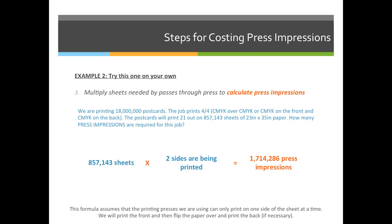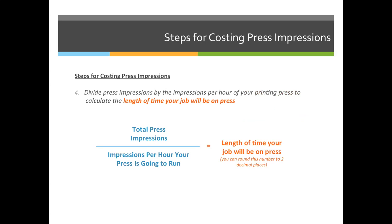Step three, we calculate the total number of impressions required for the job. And once we know that, we can move on to step four, which is calculating the time — or the number of hours — that your job will be on press. For step four, we're going to divide the total number of impressions calculated in step three by the impressions per hour that our printing press can run.